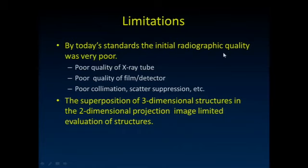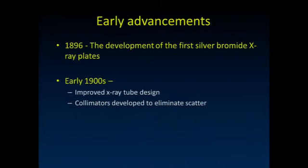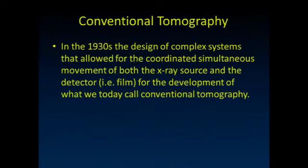What were the limitations of those early images? Really poor quality x-ray tube, poor quality film, no good collimation, scatter suppression, and so on. A lot of the early history of x-ray imaging after 1895 was devoted to improving those things. But even after that was done, you still have the issue that on a planar radiograph, those 3D structures are all superimposed into a 2D image.